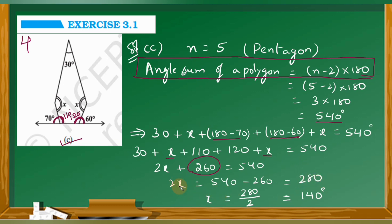So x is equal to 280 divided by 2. Cancelling: x is equal to 140 degrees. So the x value in this figure is 140 degrees. Understood, children?